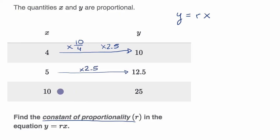And then here, 10 times 2.5 is clearly 25. And you could work it out by hand. I did a little bit of the multiplication in my head. But you can see, in every case, I take my x, I multiply it by 2.5, I get my y.